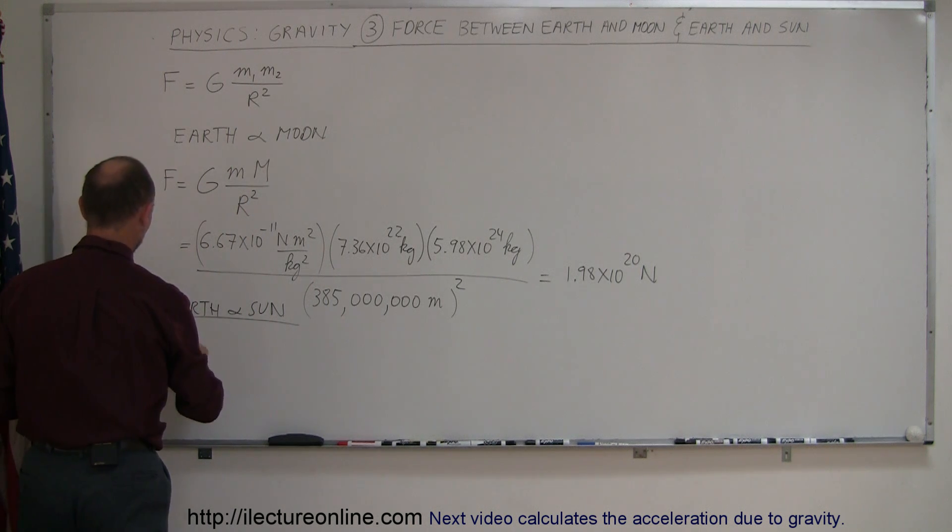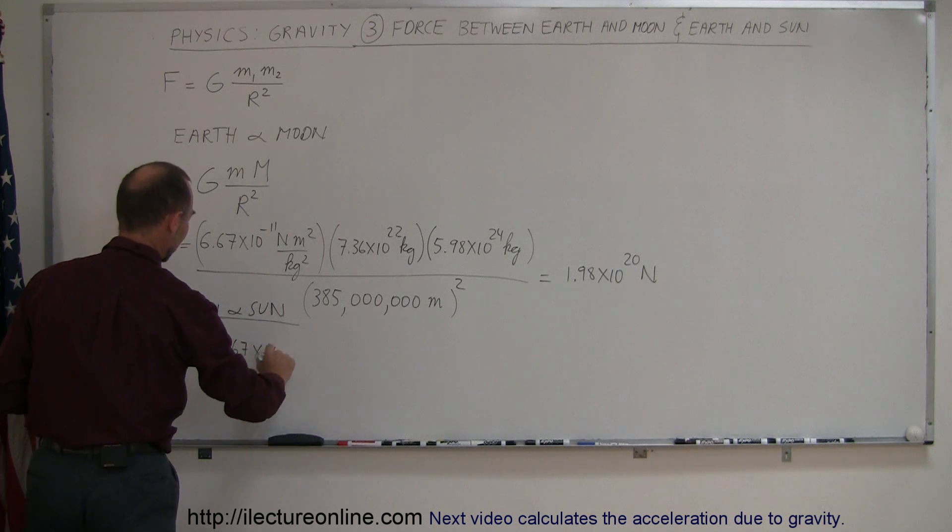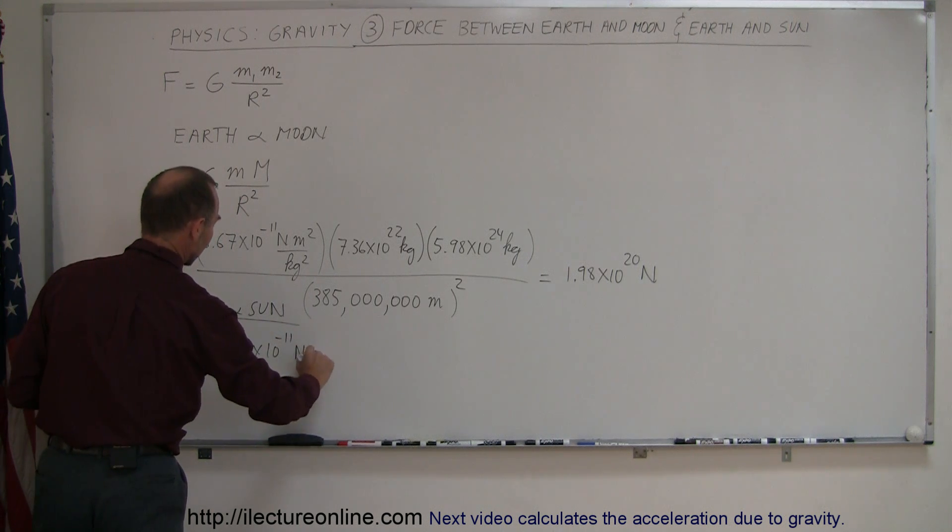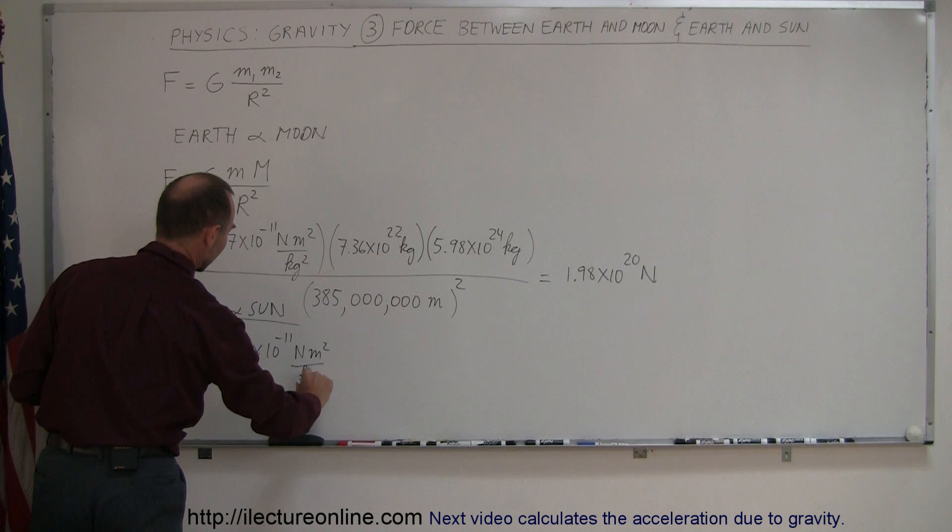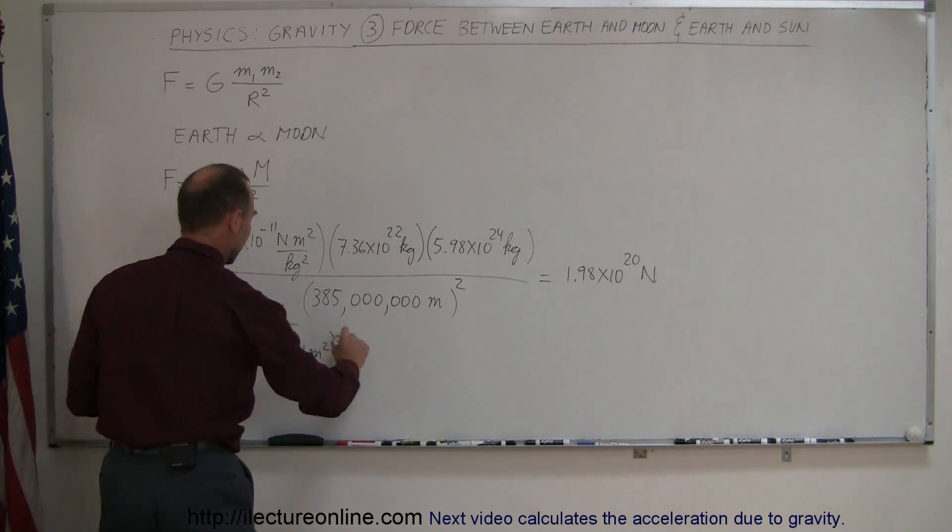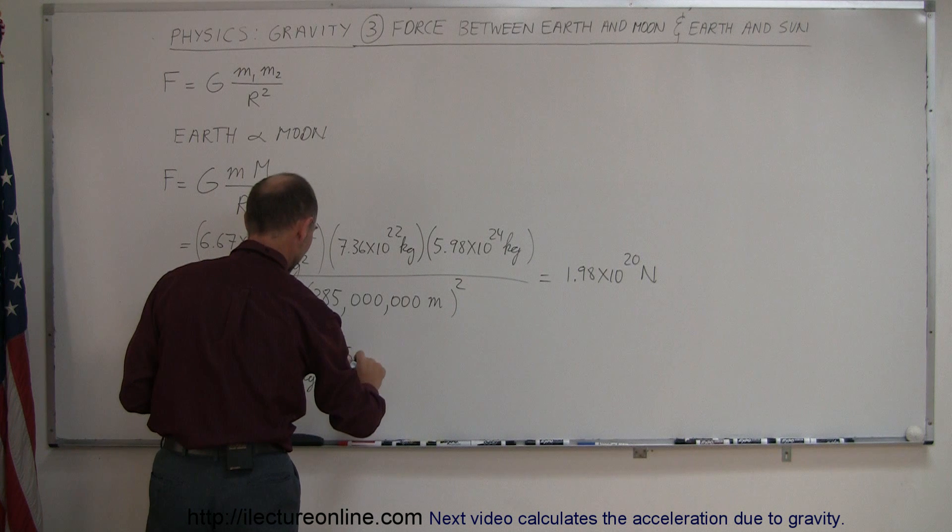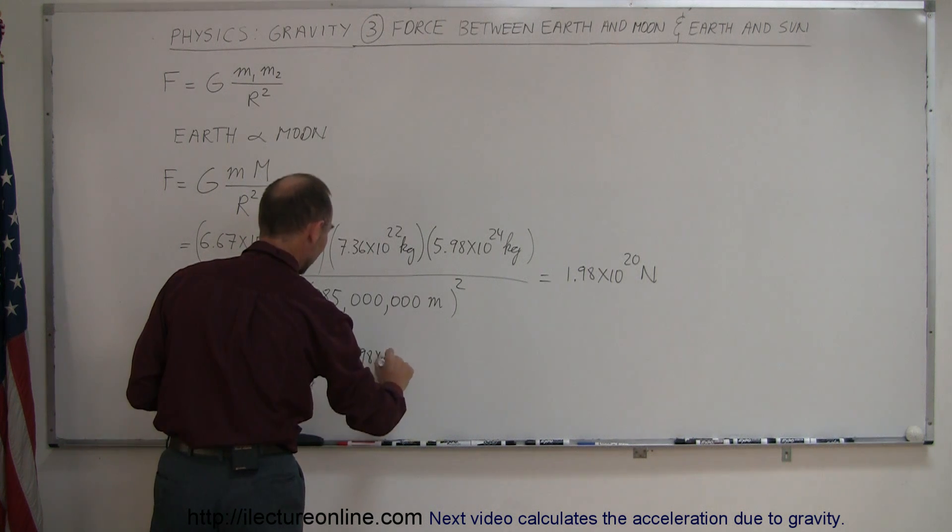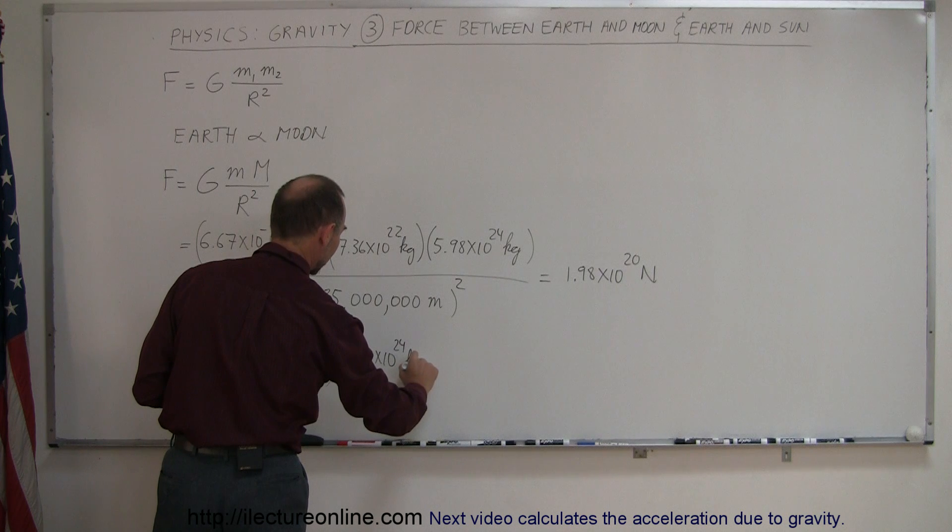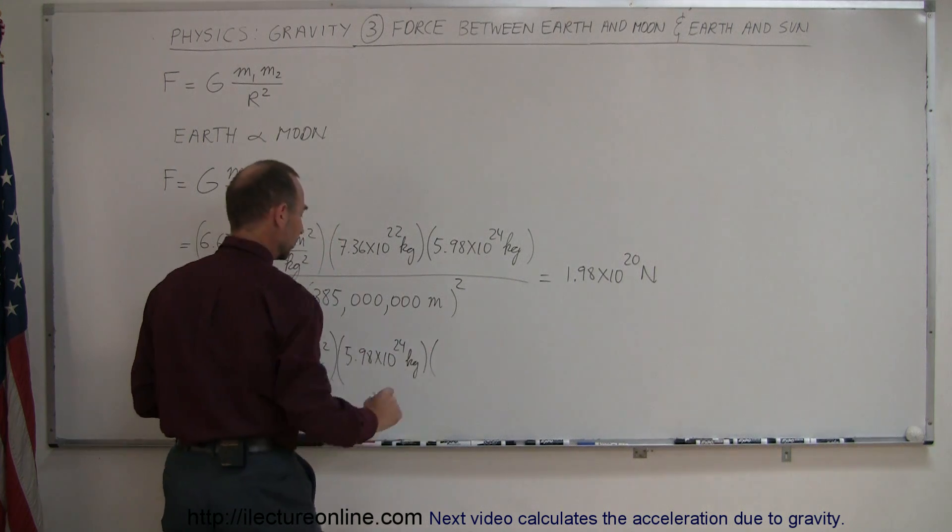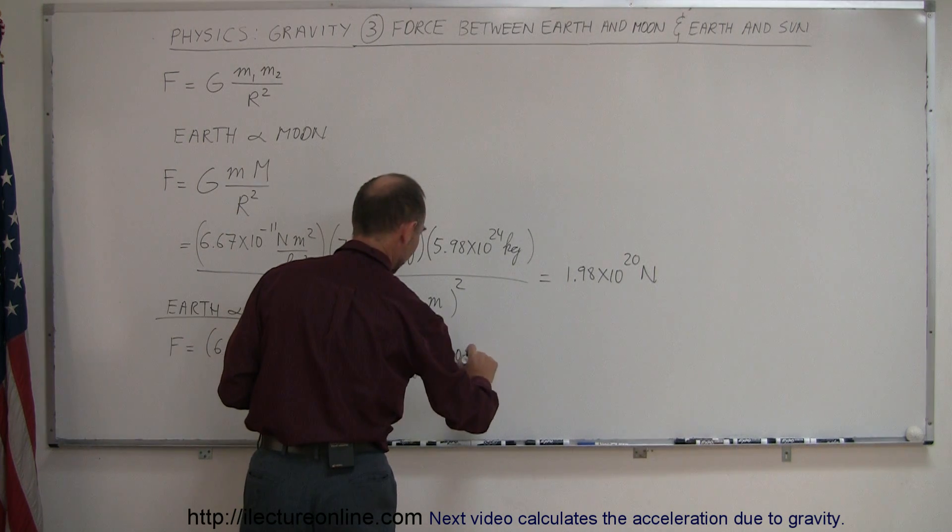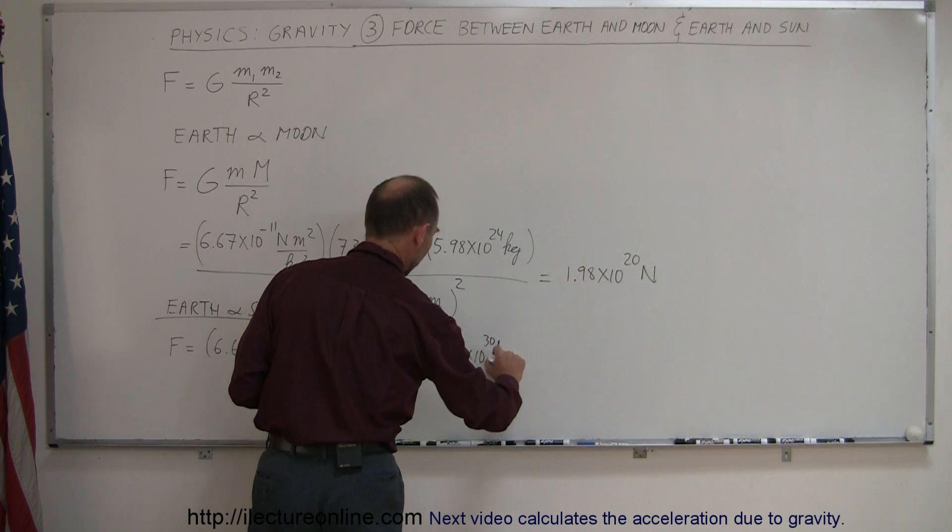The force between those two would be equal to 6.67 times 10 to the minus 11 Newtons meters squared per kilogram squared, multiplied times the mass of the Earth. In this case, that would be 5.98 times 10 to the 24th kilograms. Mass of the Sun is approximately 2.0 times 10 to the 30th kilograms.